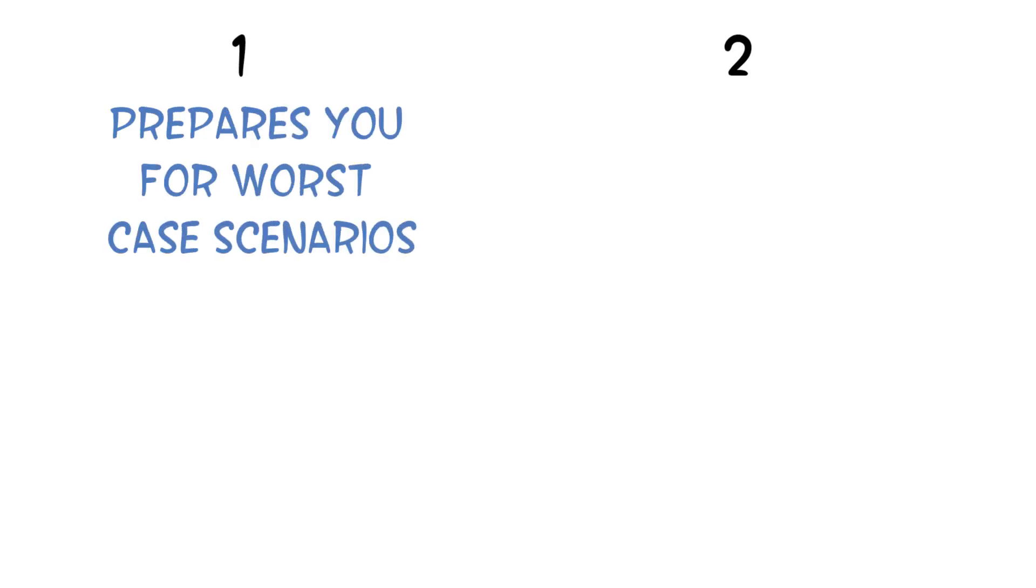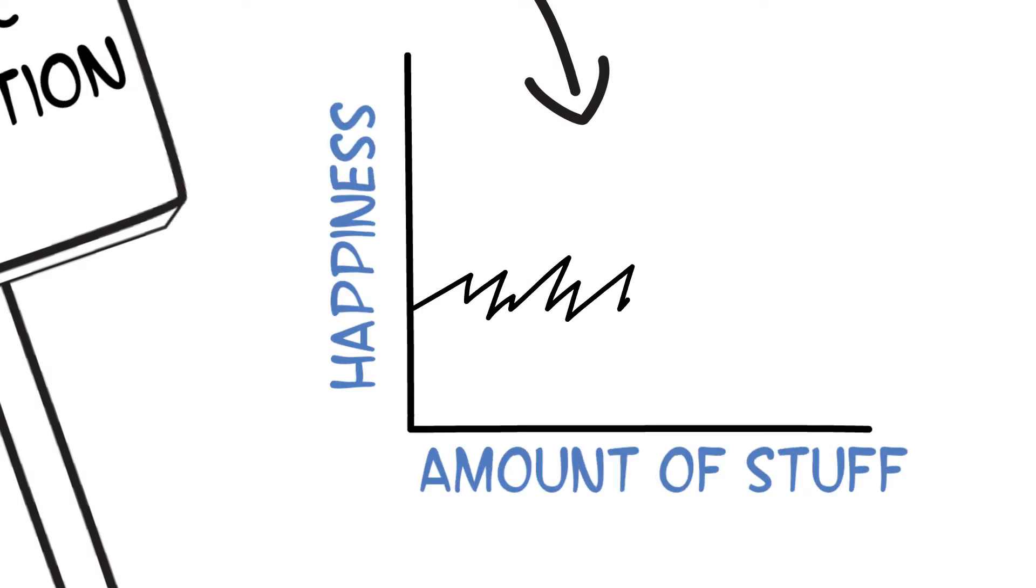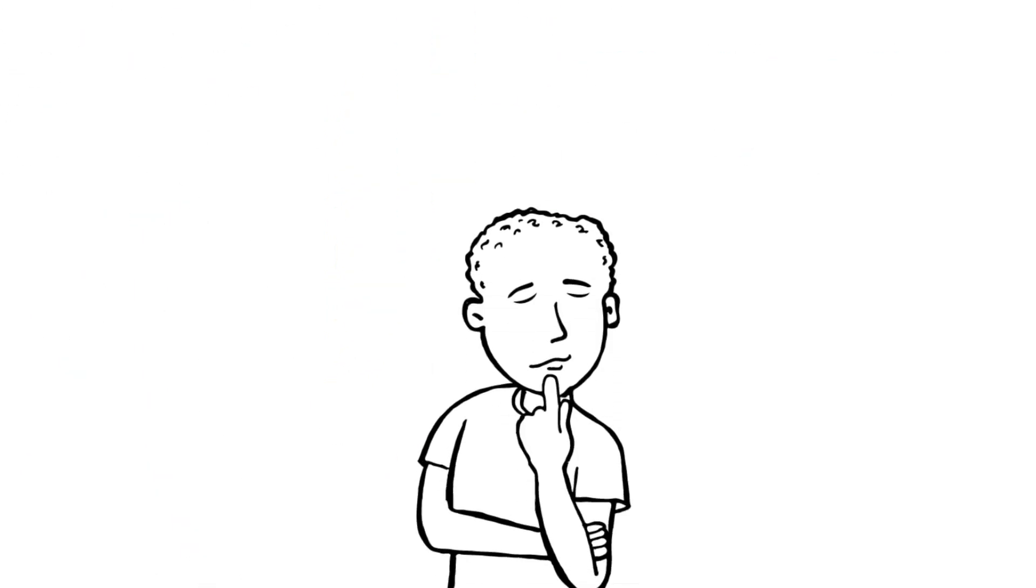This exercise does two things. It prepares you for the worst case scenarios, some of which might even happen to you at some point. And it helps you put things into perspective and to practice gratitude. It also keeps hedonic adaptation under control, which basically means that we constantly get used to the things we have and then begin to take them for granted. Negative visualization is a simple exercise that can remind us how lucky we are.